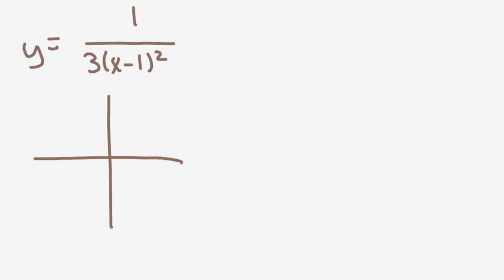So now let's look at the reciprocal function 1 over 3 times x-1-squared. So once again, to find where the vertical asymptotes will be, I need to set the denominator equal to 0.